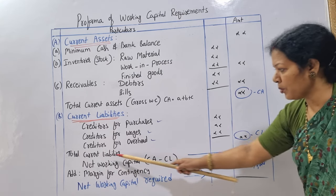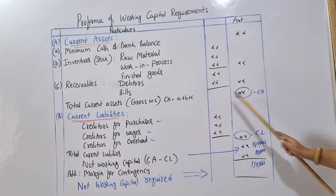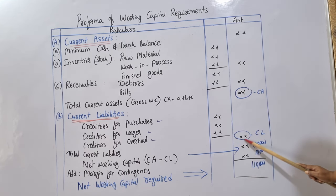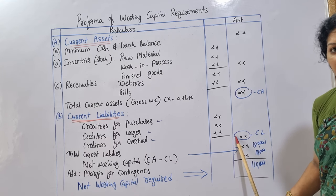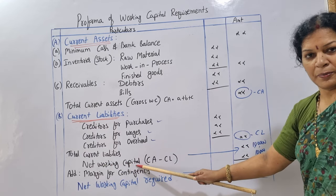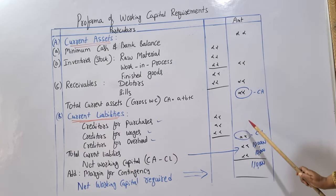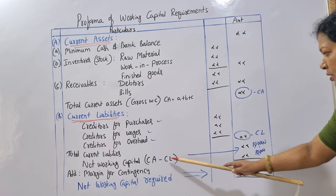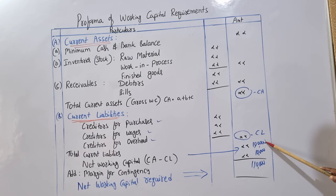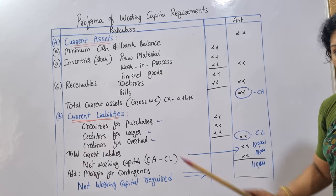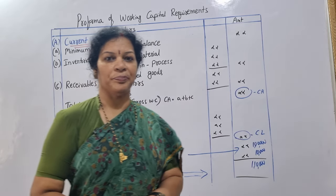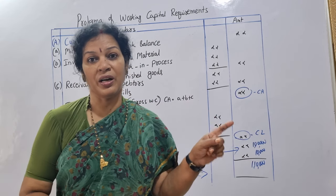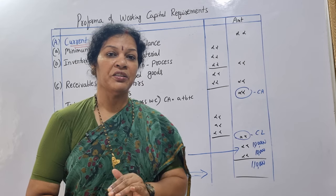Net working capital equals current assets minus current liabilities. For example, if current assets are two lakh and current liabilities are one lakh, then net working capital is two lakh minus one lakh, which equals one lakh. Generally, companies require positive net working capital. This value helps manage day-to-day operations and plan for future requirements.